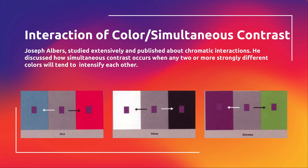Then we get into actual color theory — interactions of color. Joseph Albers studied color theory and chromatic interactions. He's one of the forefathers of actual color theory, a scientist who studied color — and a lot of color theory comes from him. A lot of what he studied was simultaneous contrast.